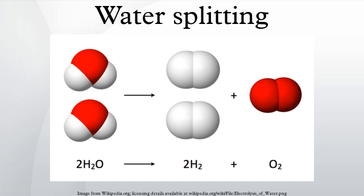Some prototype Generation 4 reactors, such as the HTTR, operate at 850 to 1000 degrees Celsius, considerably hotter than existing commercial nuclear power plants. General Atomics predicts that hydrogen produced in a high-temperature gas-cooled reactor would cost $1.53 per kilogram. In 2003, steam reforming of natural gas yielded hydrogen at $1.40 per kilogram; at 2005 gas prices, hydrogen cost $2.70 per kilogram. Hence, just within the United States, a savings of tens of billions of dollars per year is possible with a nuclear-powered supply, much of which would translate into reduced oil and natural gas imports.